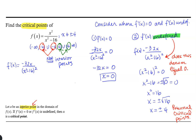So what we end up with is that there is one critical point for this particular function, and that critical point is x equals 0.